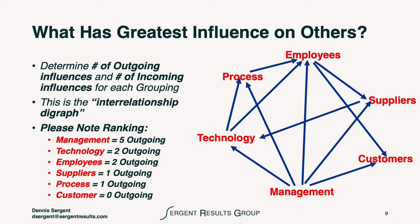We identify the number of outgoing influences and the number of incoming influences for each grouping. This is, in effect, the interrelationship digraph, or we call it the affinity digraph.